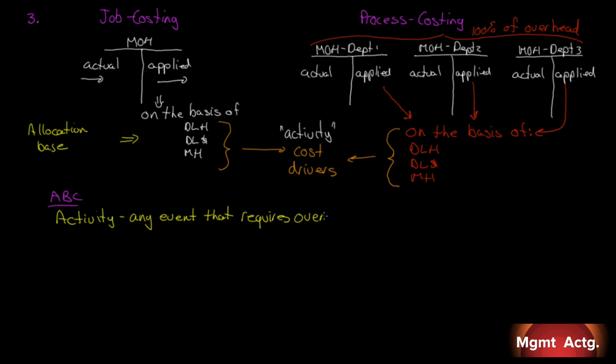We've seen in job costing and process costing above, we've determined direct labor hours, direct labor dollars, and machine hours as activities that drive the overhead cost. With ABC, we start to identify even more of these types of activities, more of these events.